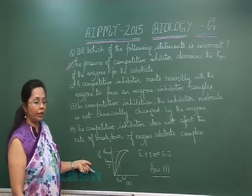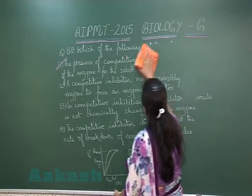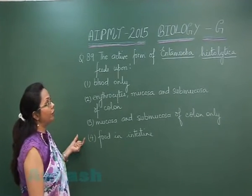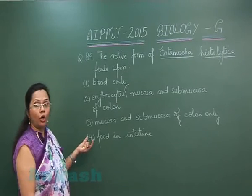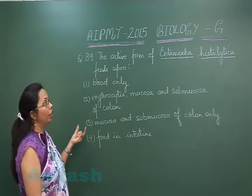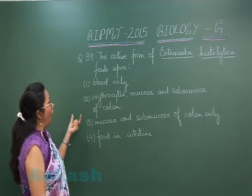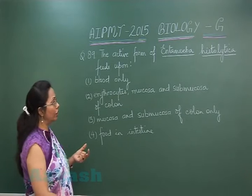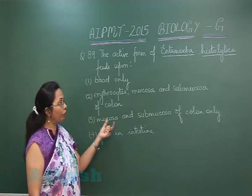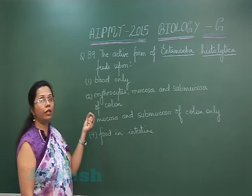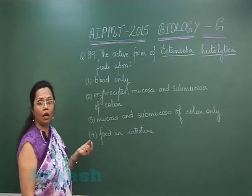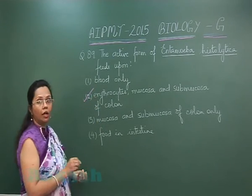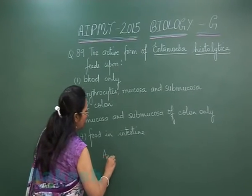Question 89: The active form of Entamoeba histolytica feeds upon — Entamoeba is a protozoan parasite which infects the colon and causes amoebiasis or amoebic dysentery. It bores through the mucosal lining, feeding on cells, then reaches the submucosa where blood vessels are present, and from there it penetrates the blood vessels and feeds on RBCs. So the answer is erythrocytes, mucosa, and submucosa of the colon — option 2.